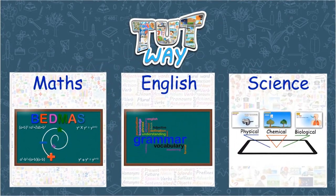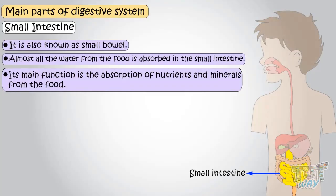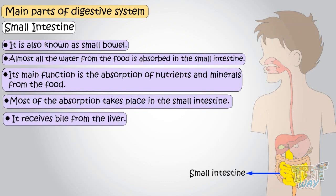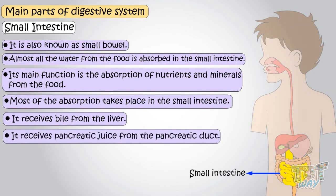The maximum absorption takes place in the small intestine. The small intestine receives digestive juices — the bile and pancreatic juice — bile from the liver and pancreatic juice from the pancreatic duct.